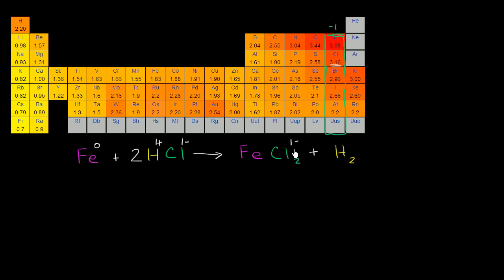Well, if each of these have an oxidation state of negative 1, and this whole thing, this iron 2 chloride, is a neutral molecule, then the iron is going to have to, 2 times negative 1 is negative 2. The iron, in order to net out, is going to have to have a positive 2, a positive 2 oxidation number.